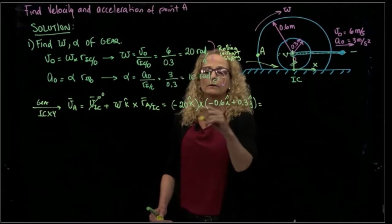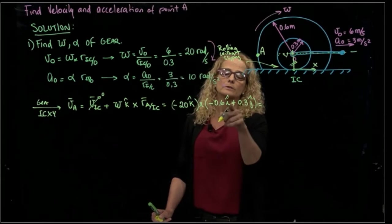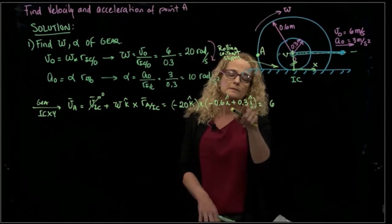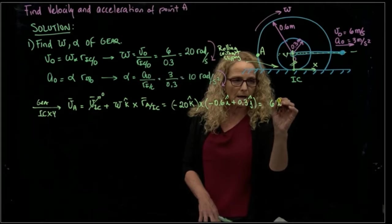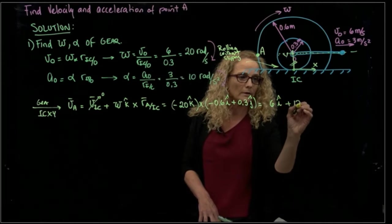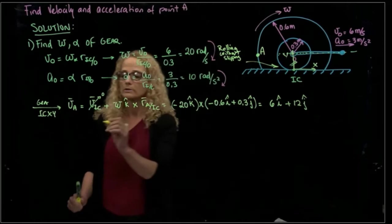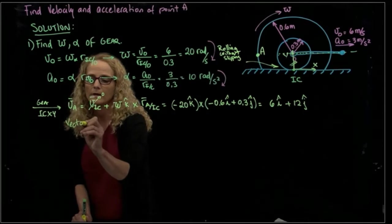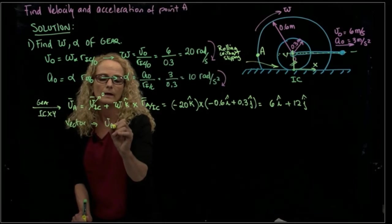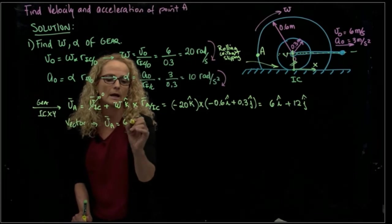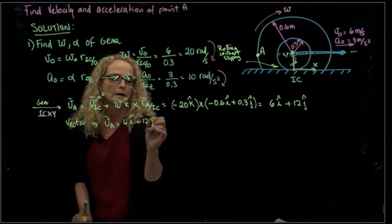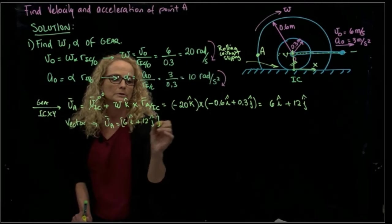Then I do my cross product and I say K cross I is J, 20 times 0.3, 6 in I plus 12 in J. So that's the velocity in A. So I can say vector-wise as a vector, this is V equals 6I plus 12J meters per second.